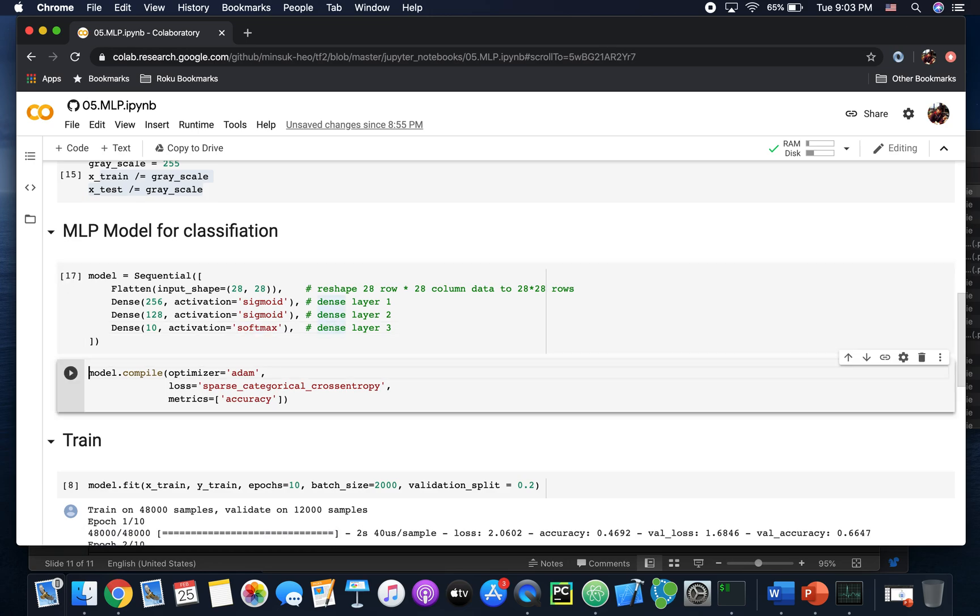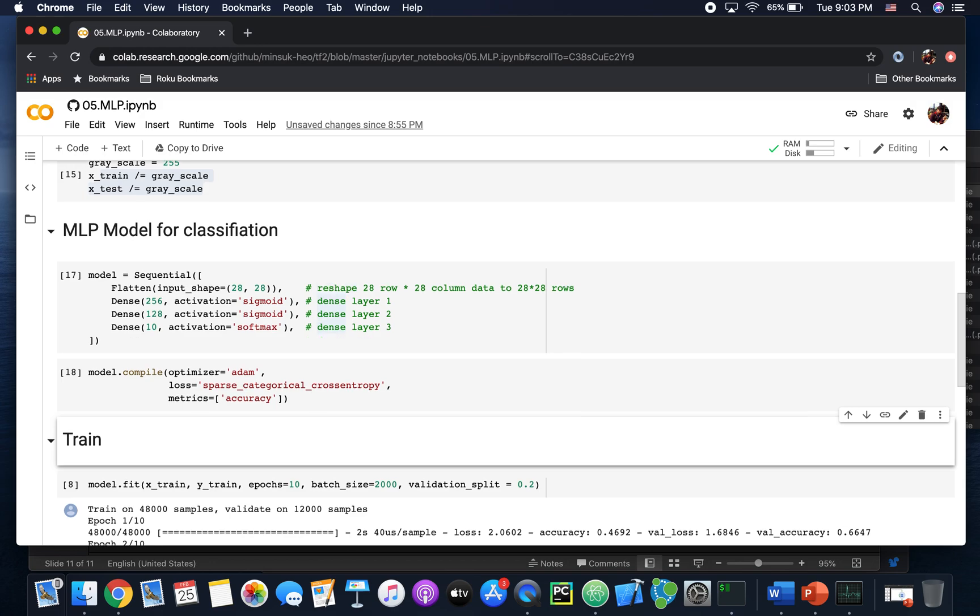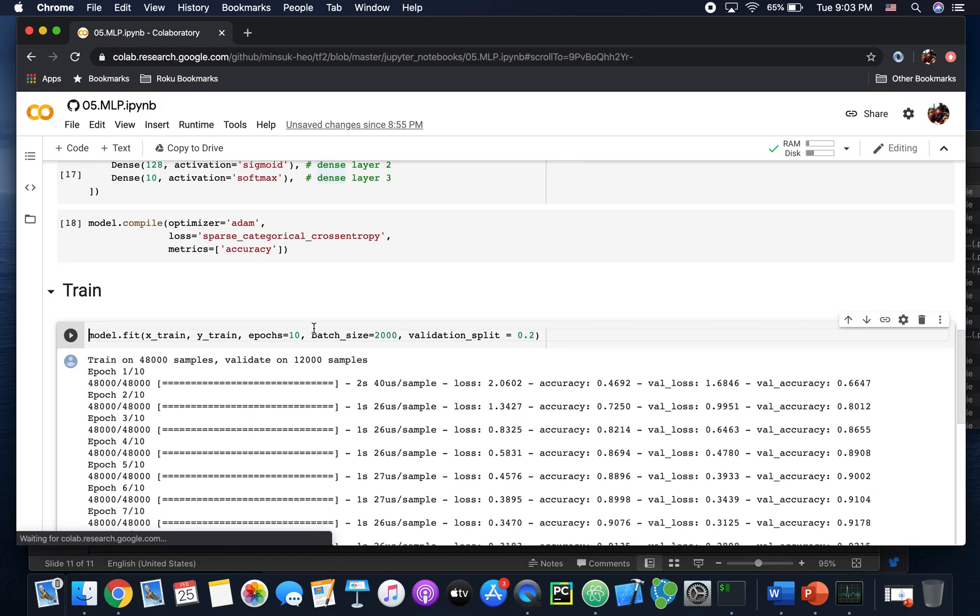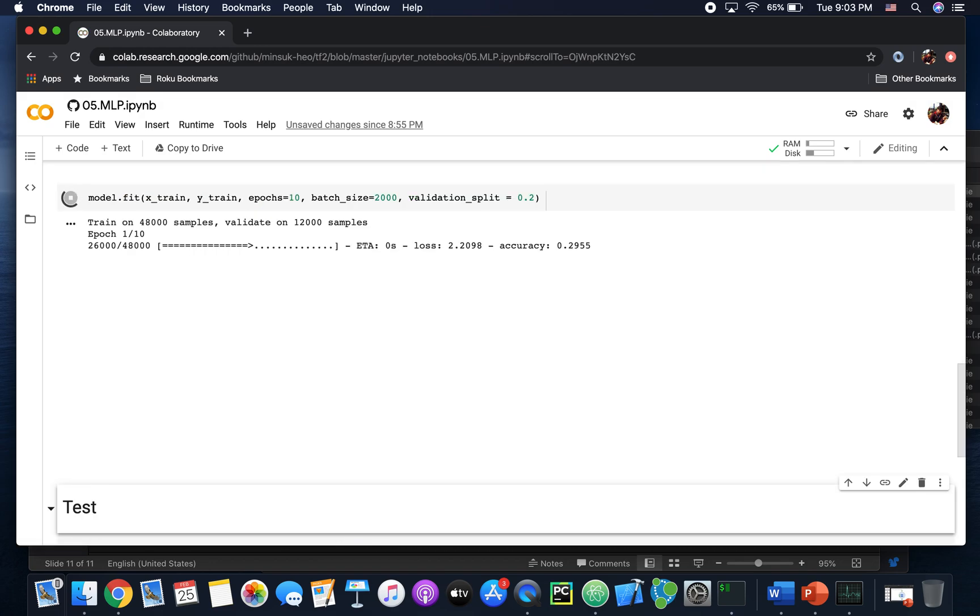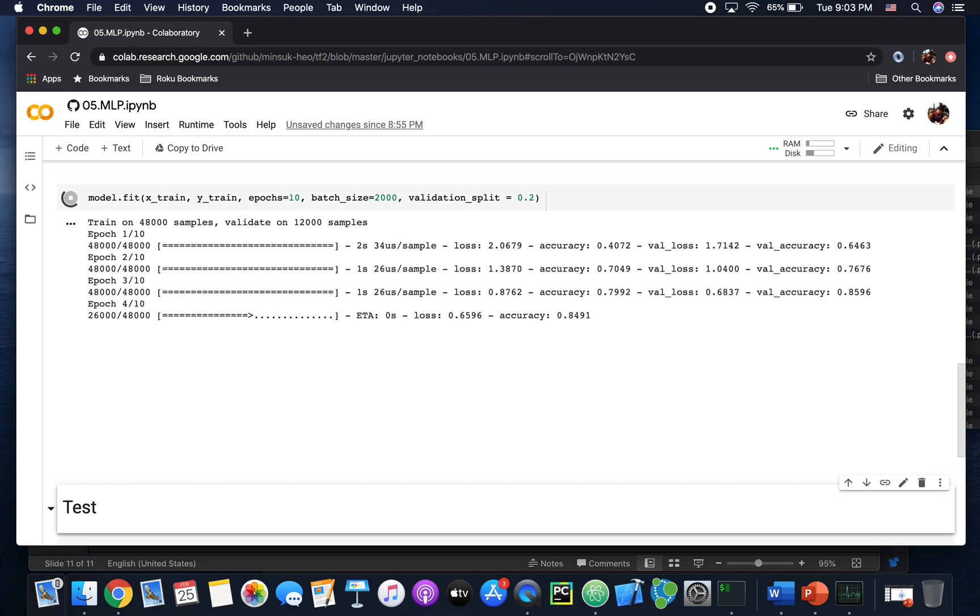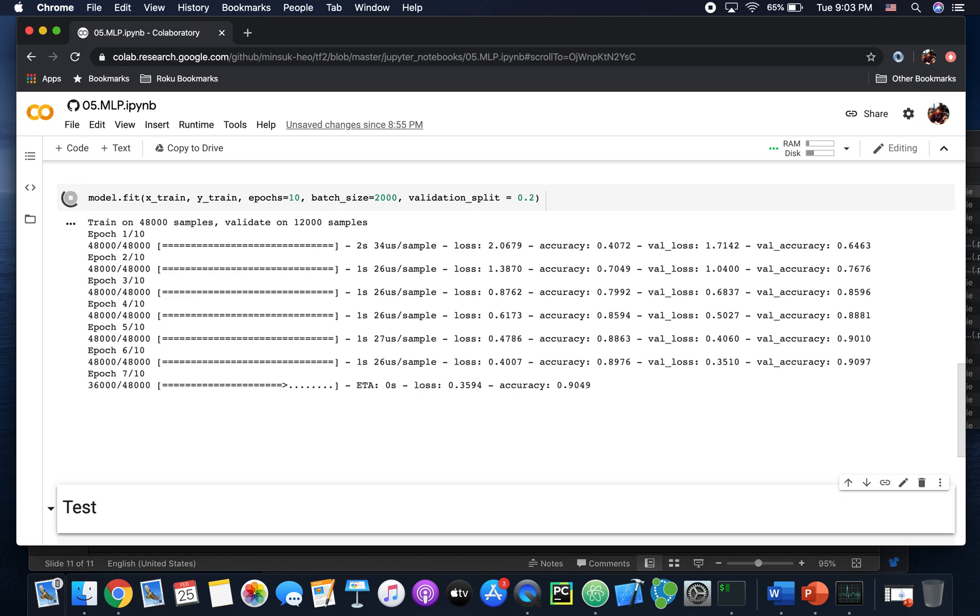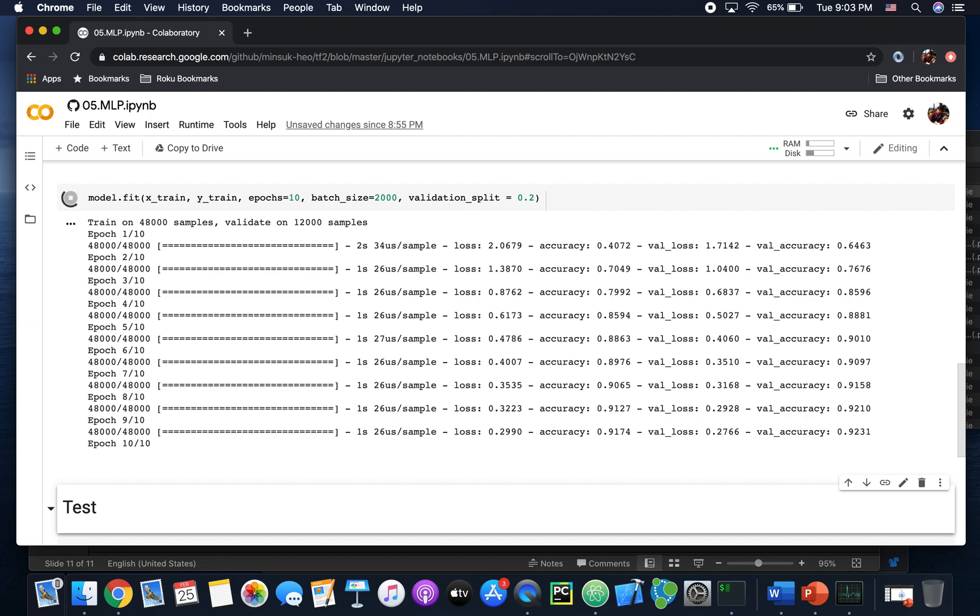I train the model using the Adam optimizer and loss function is just cross entropy. Now I just train the model here and you can see the accuracy keeps increasing. It's over 90 and now done.